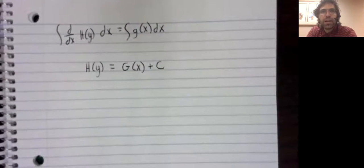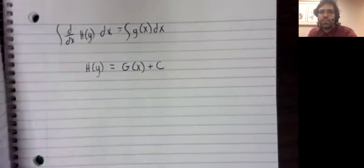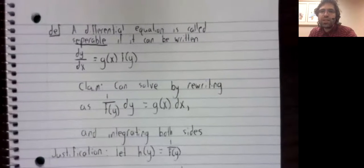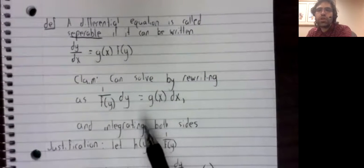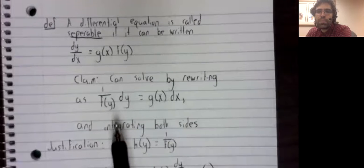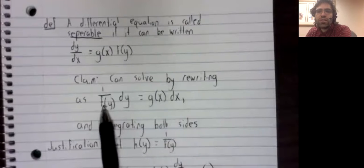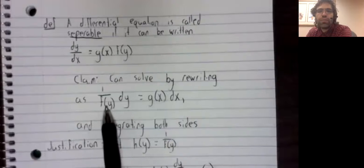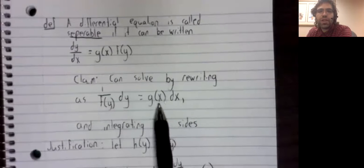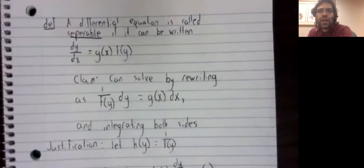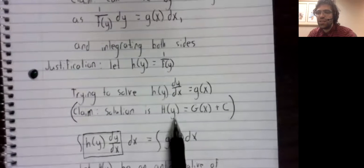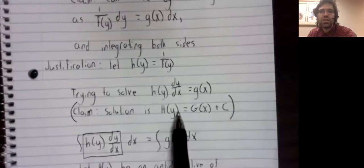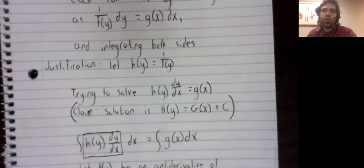And what we wind up with is exactly what this process says we should wind up with. We integrate this side, we get capital H of y. We integrate this side, we get capital G of x plus c. And this was exactly our goal.